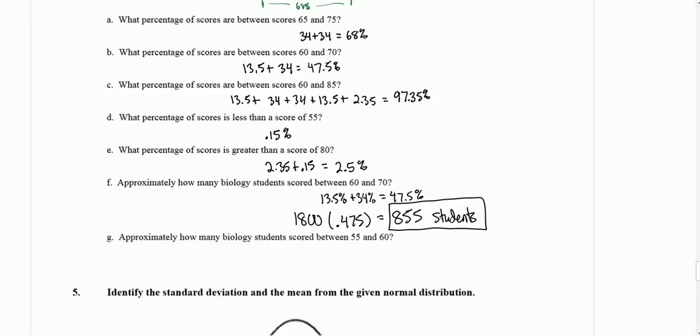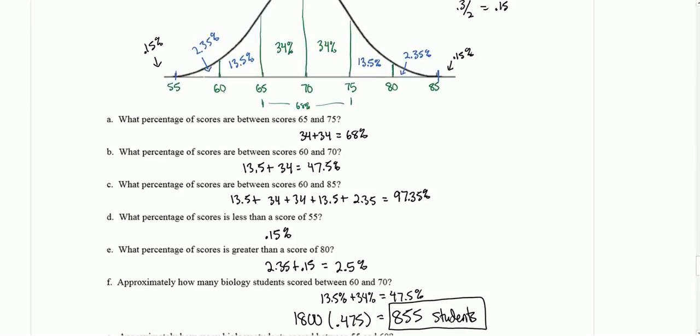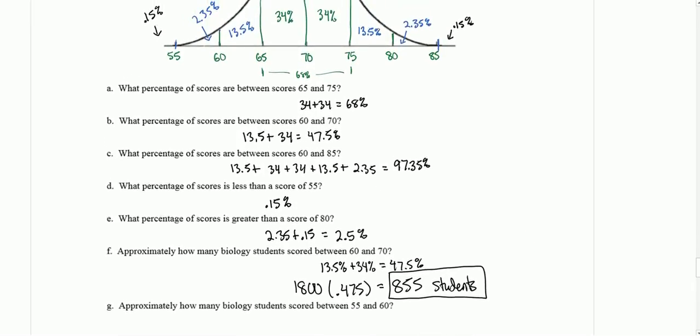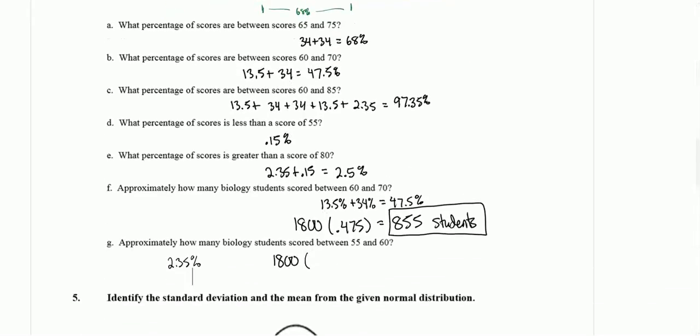Part G says approximately how many biology students scored between 55 and 60. Grab the percentages between 55 and 60. In this case, it's just 2.35%. So there's 1,800 students times 2.35%. If we change percent to a decimal, we move the decimal place to the left two places, so it's 0.0235. We multiply together 1,800 times 0.0235 and get 42.3. But we're talking about actual students, so round that to the nearest integer, which would be 42 students.